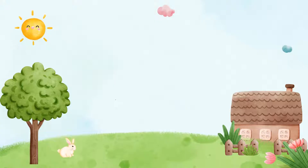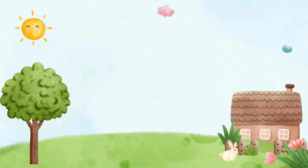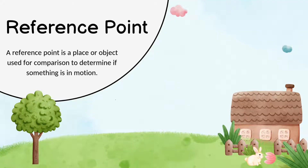Here, you see a rabbit happily hopping away from a tree. The tree stands still, and the rabbit moves farther and farther away. But how do we know the rabbit is actually in motion? This is where the concept of a reference point comes into play. A reference point is a place or object used for comparison to determine if something is in motion.